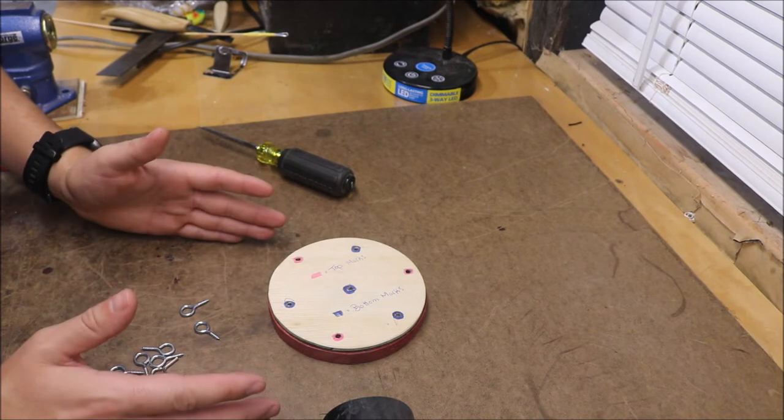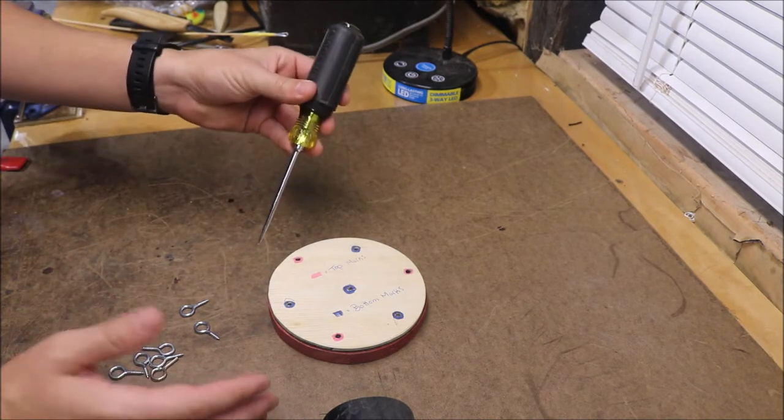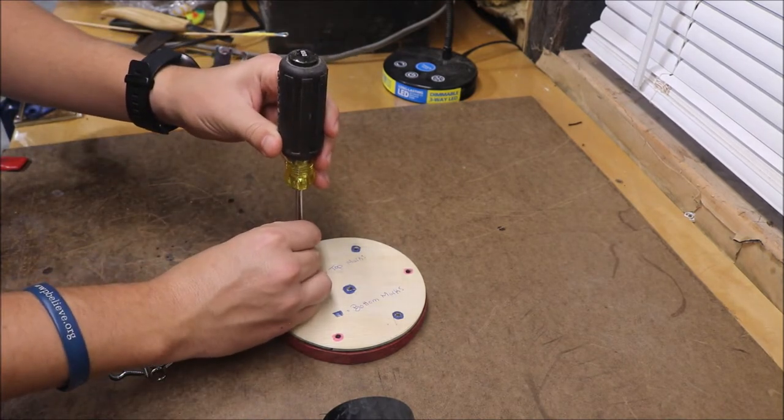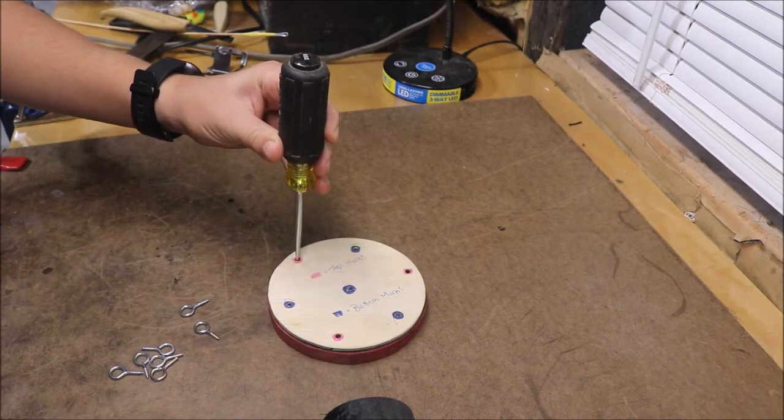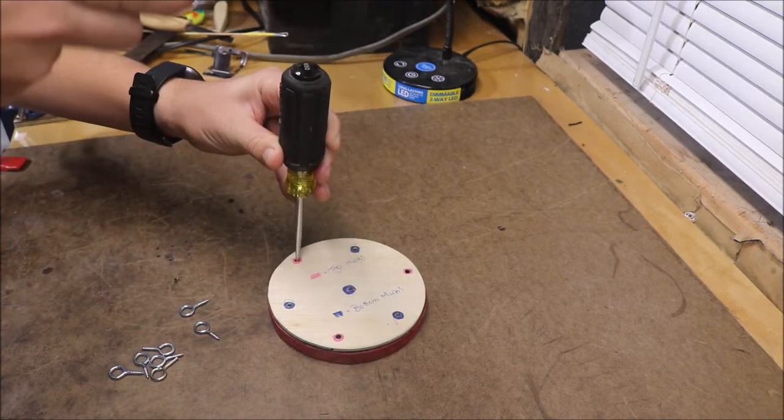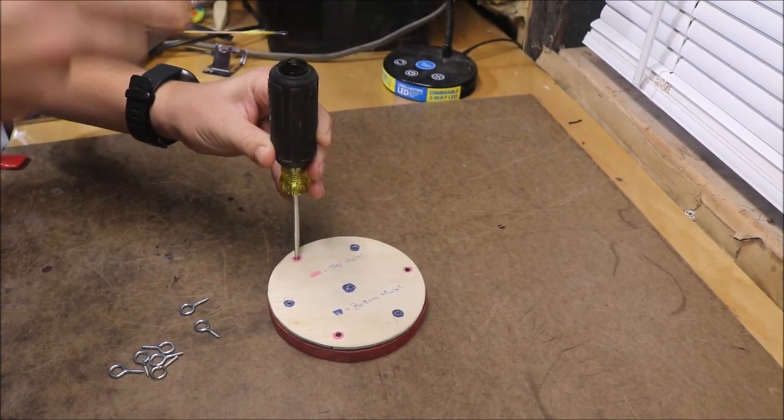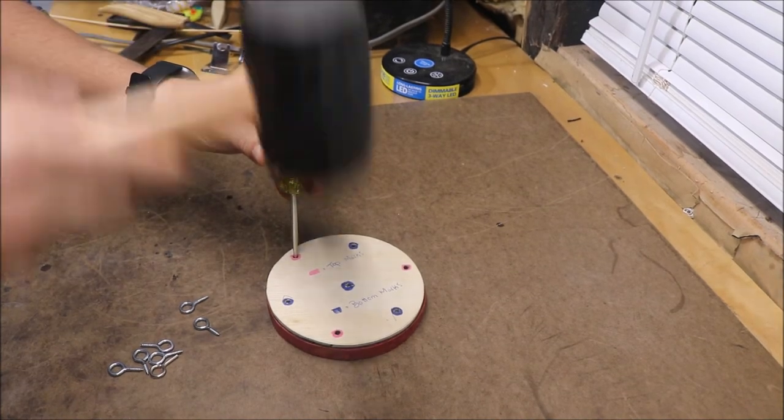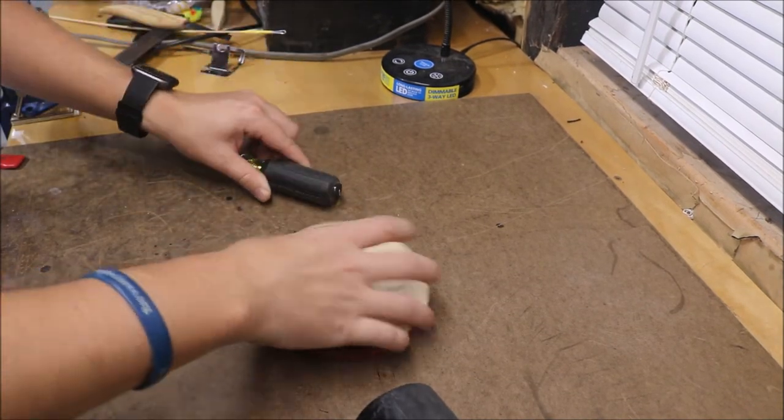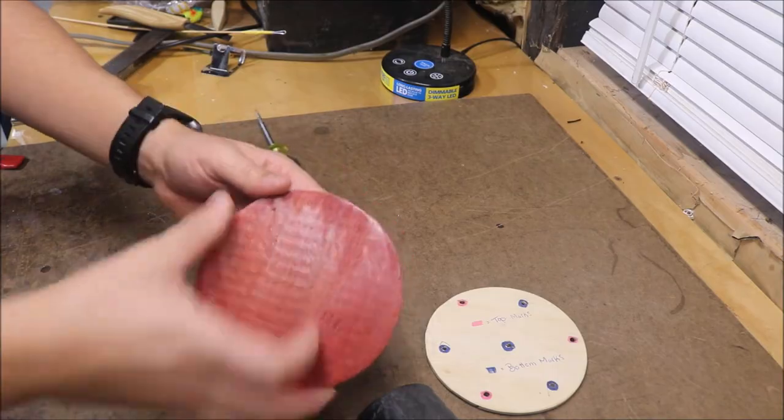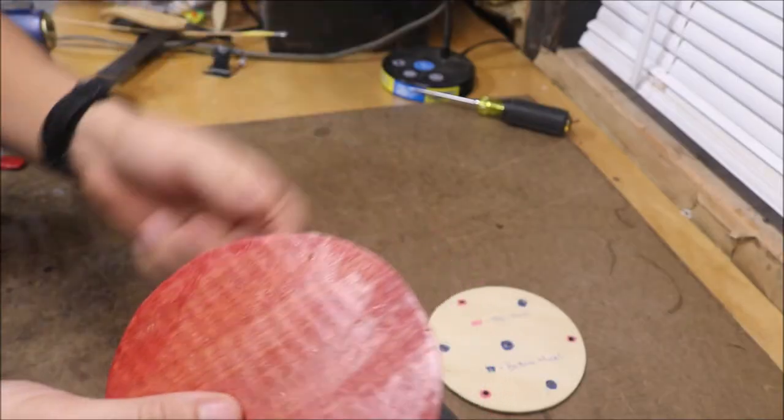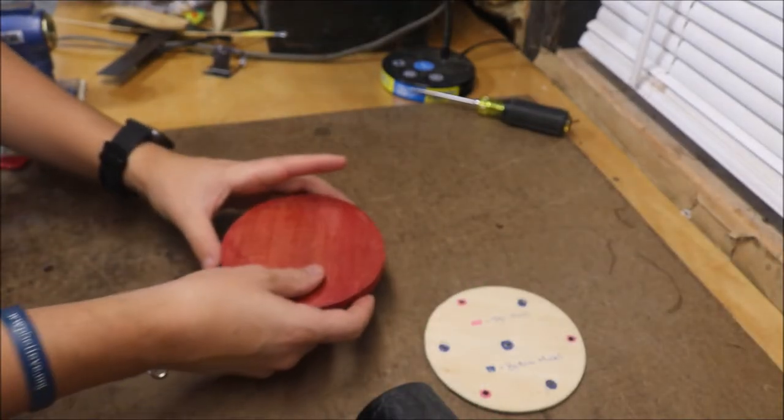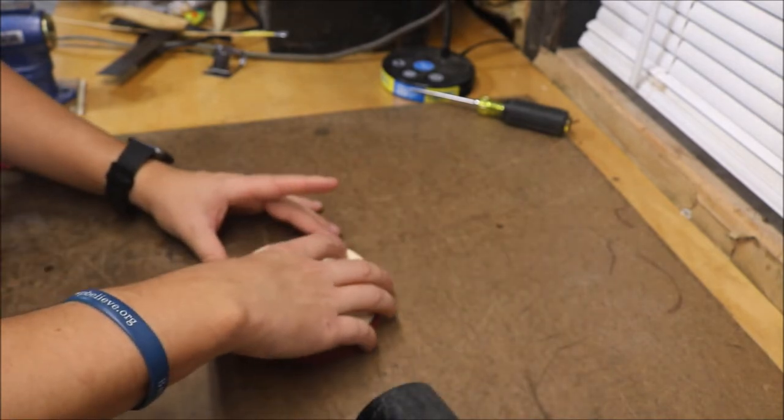So the easiest way I found to do this is if you take a scratch awl, put it through a hole just to line it up, and then very carefully take a rubber mallet, tap it on the top a few times, and then take it out. It's going to give you a perfect little spot right there for where the screw eye is going to go or the eyelets, and you're going to do that for a total of three times.